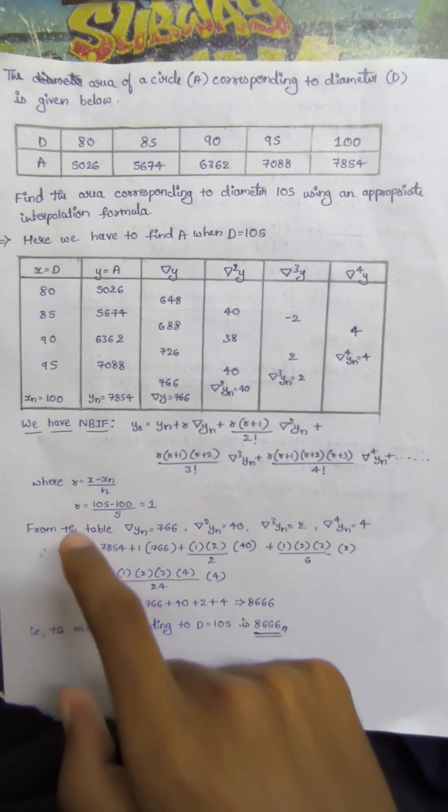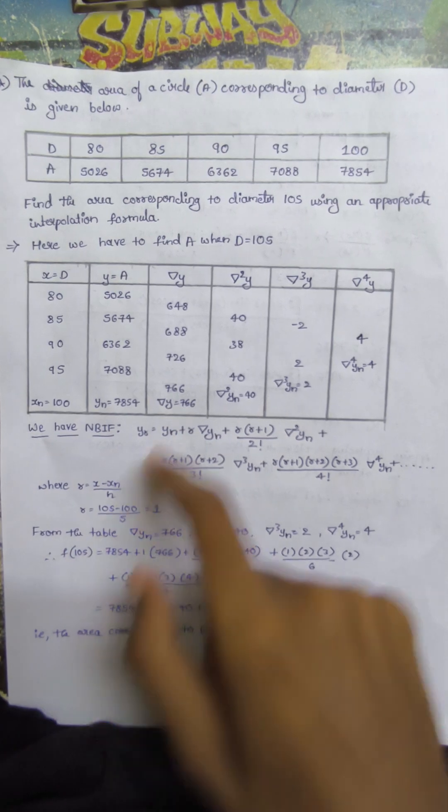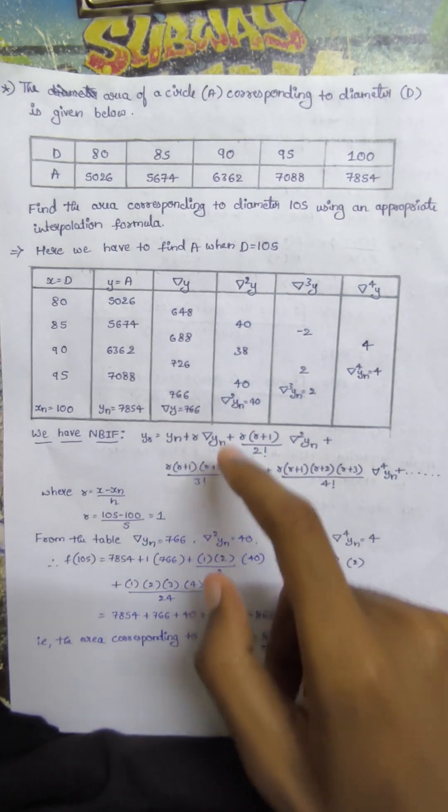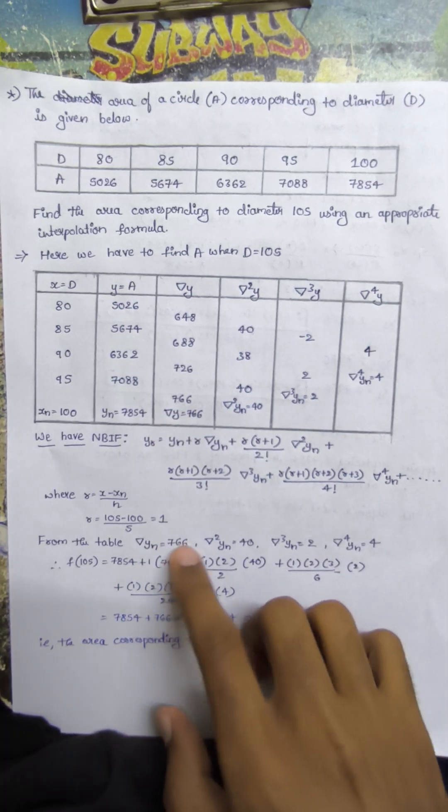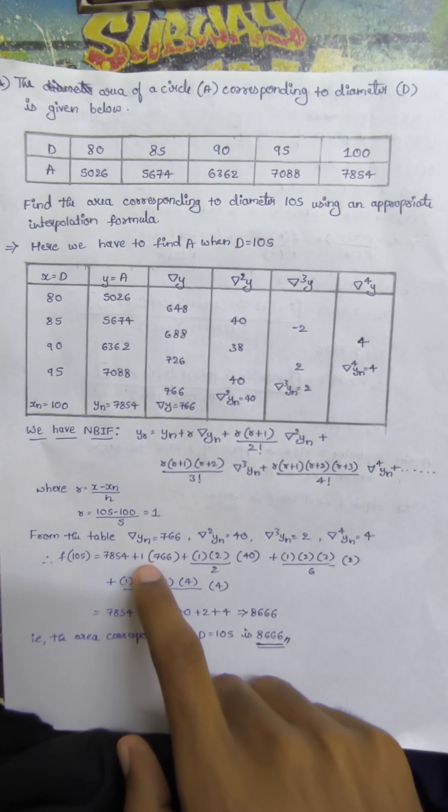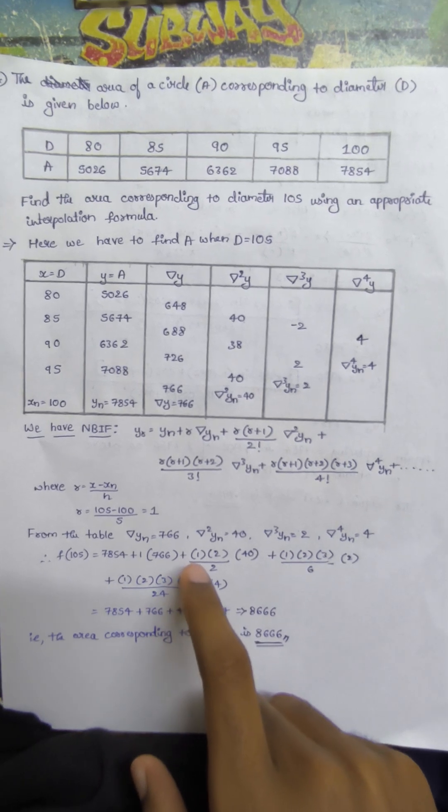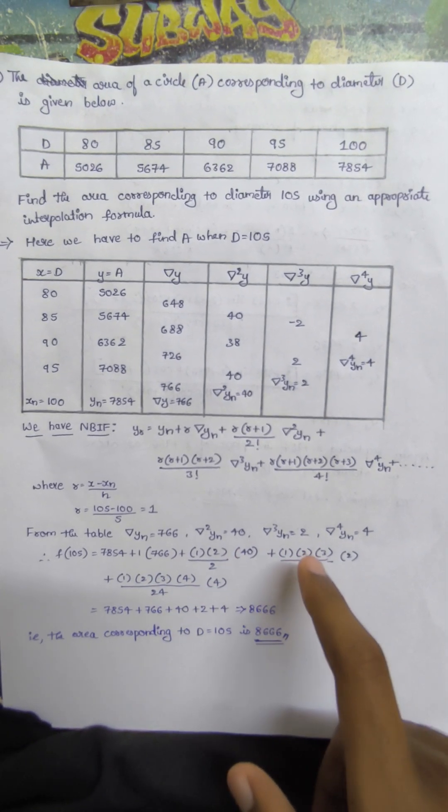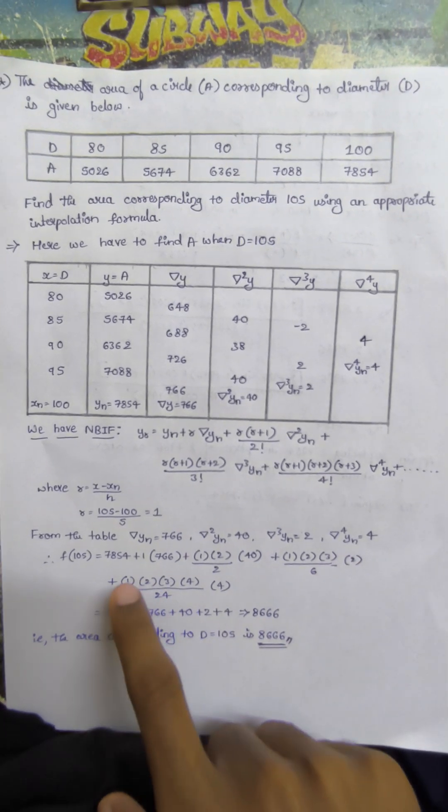f(105) should be found by substituting these values in the formula: 7854 + 1×766 + (1×2)/2×40 + (1×2×3)/6×2 + (1×2×3×4)/24×4.